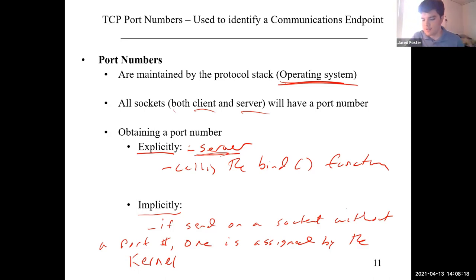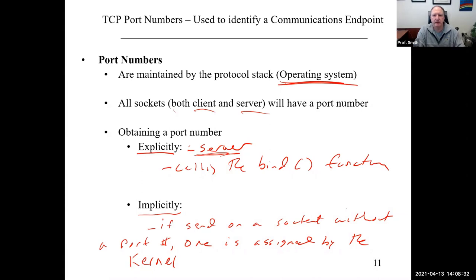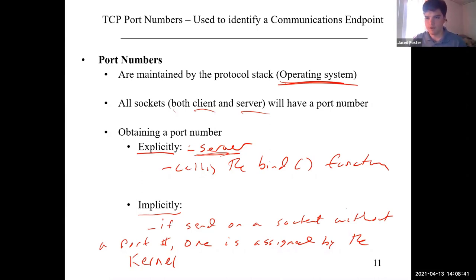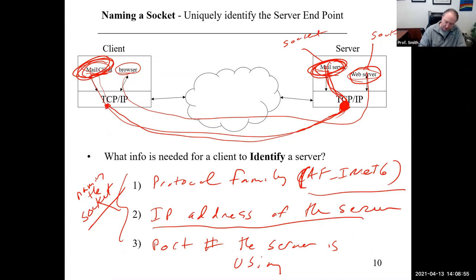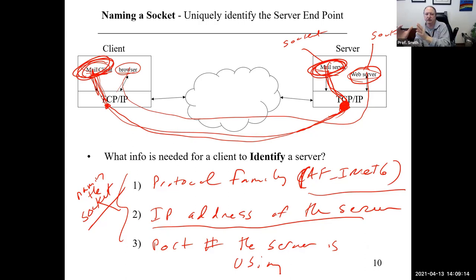Question: why do we care about the client's port number? When the server sends back to the client, it needs the client's IP address and port number to route the packet back up the kernel to the mail client rather than the web client. Every packet has the client IP, server IP, client port number, and server port number. That uniquely identifies a complete end-to-end connection and allows two-way communication.